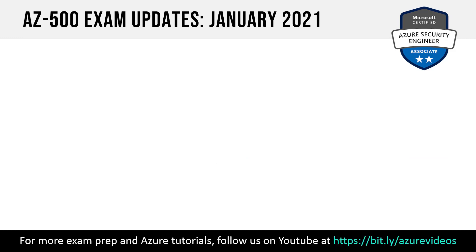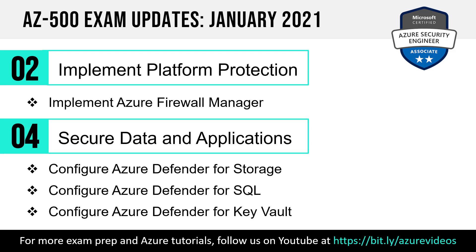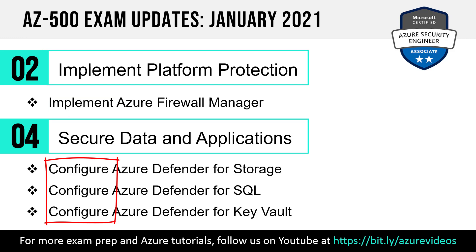To recap: in domain two we have implement Azure Firewall Manager, and in domain four we have configuring Azure Defender for Storage, SQL, and Key Vault — those three new line items. Notice the verbs in these skills measured: implement and configure. This implies deep, hands-on knowledge, which is pretty standard for associate-level Microsoft exams.